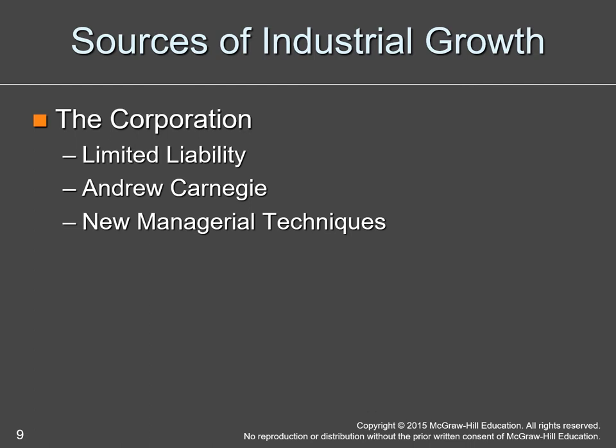Another source of industrial growth is the corporation. In the early 1800s not many people used corporations — it was hard to get one because each state had its own rules, and many people looked down on corporations because they felt it was cheating since you weren't risking your personal assets. Now the corporation and limited liability become more popular. Industrialists like Andrew Carnegie came to dominate the steel industry through the corporation — able to raise the capital to buy not only steel furnaces and steel companies, but also the shipping companies, coal mines, and iron mines.